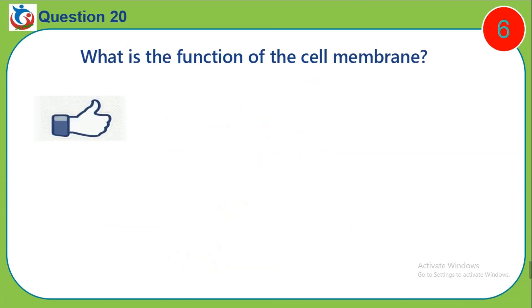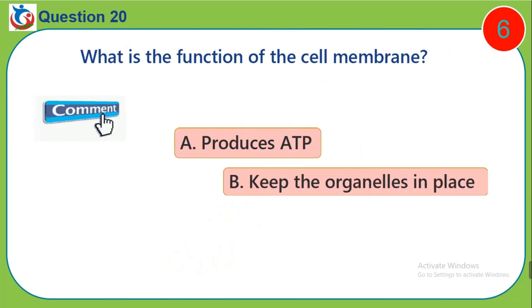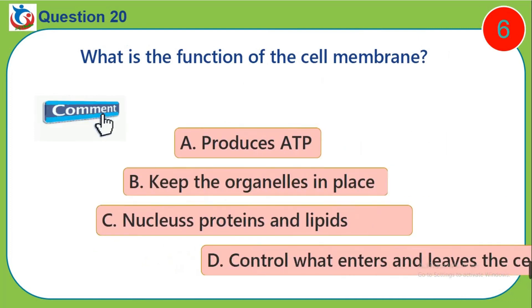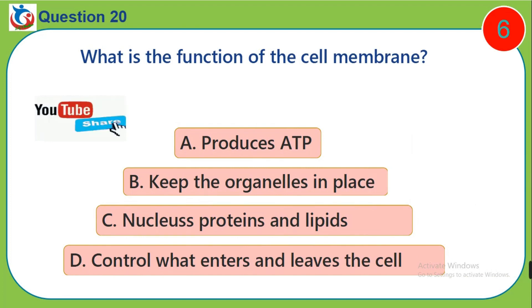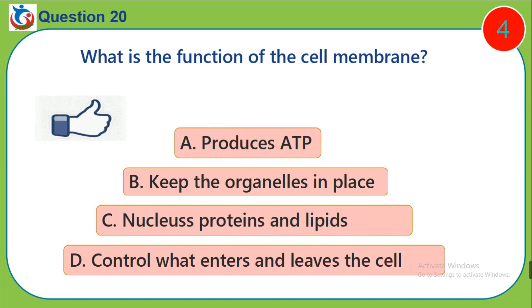Question 20. What is the function of the cell membrane? A. Produces ATP. B. Keeps the organelles in place. C. Produce proteins and lipids. D. Control what enters and leaves the cell.